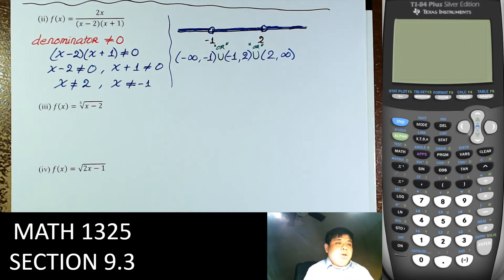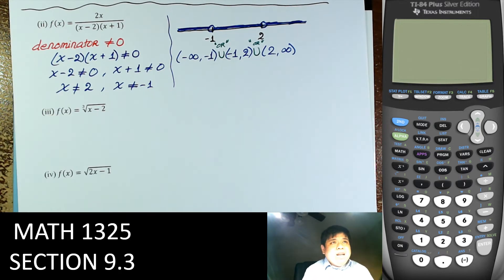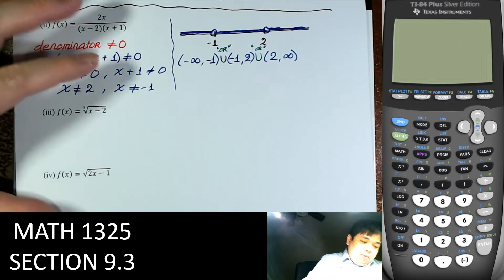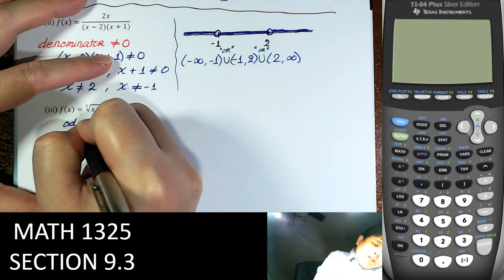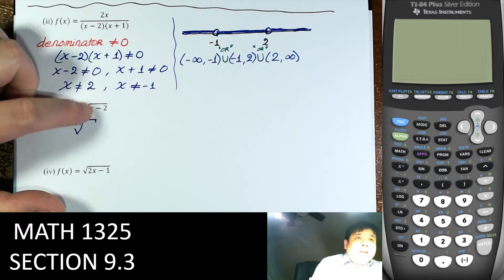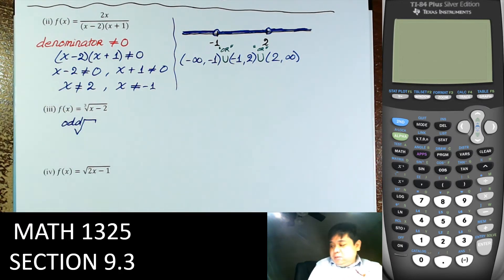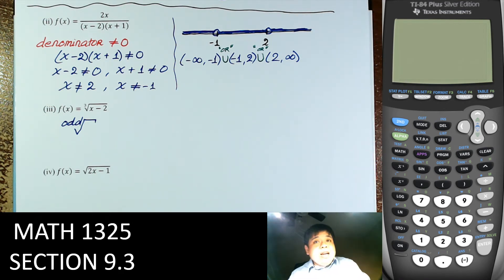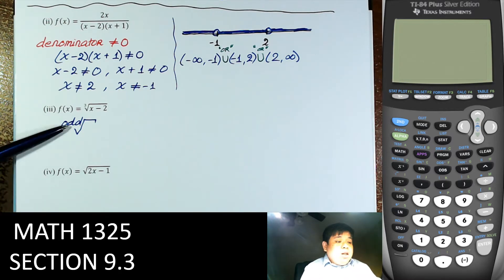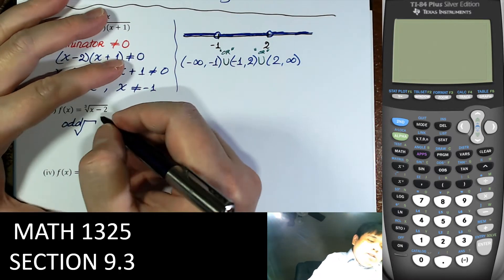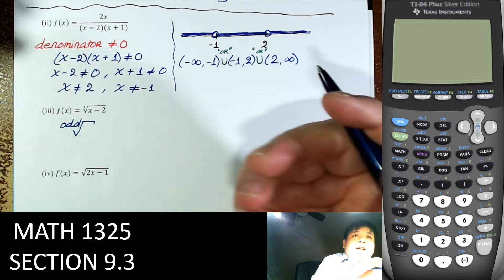This one has a cube root and that one has a square root. A cube root — it doesn't matter what's inside — if it is defined, it is continuous. So here we have an odd root and inside is x − 2, which is a polynomial defined everywhere. So this function is continuous everywhere, because x − 2 is defined and the whole thing is defined.